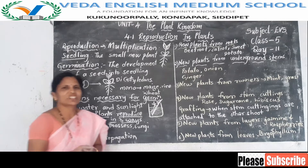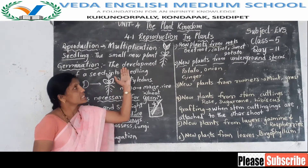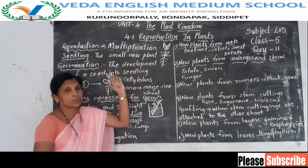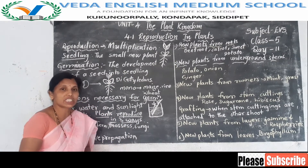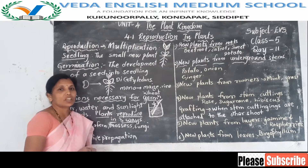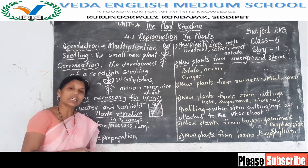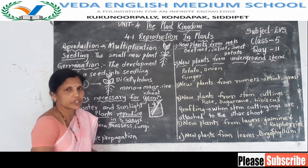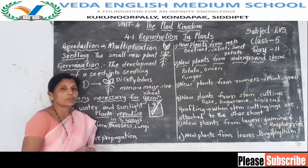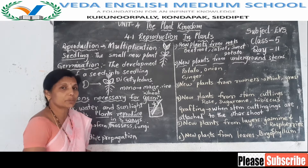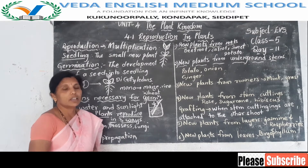Hello children. Welcome to our previous class. Our lesson is reproduction in plants. In the previous class I told about reproduction, seedling, germination, what are the conditions necessary for germination, and what is the structure of a seed. So what is reproduction? The process of giving birth to babies to keep up their species on the earth is called reproduction.